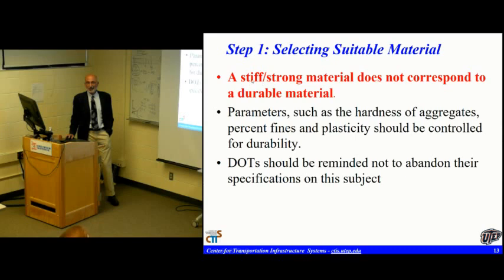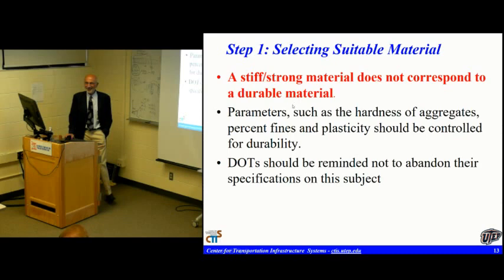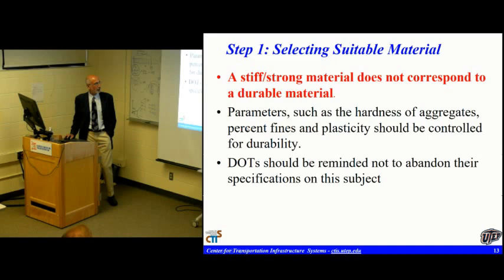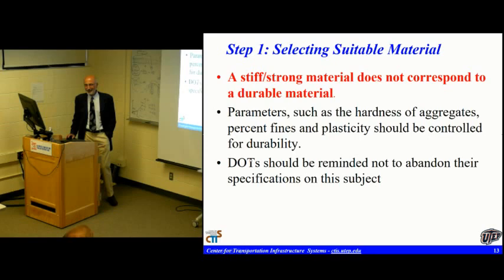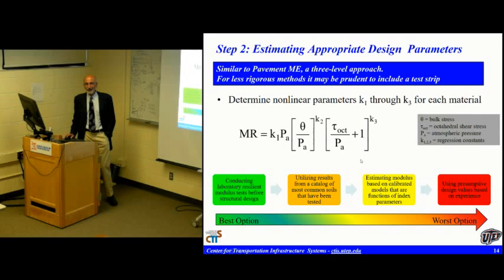A stiff or strong material doesn't mean it's a durable material. If you want a very good stiff material, get a really good base, add 15–20 percent clay in it, and leave it under the sun — when you test it, it will be extremely stiff until the first rain. Make sure that the legacy information and experience we have is not lost when you go from one process to the other. We cannot go to performance-type testing forgetting about angularity and material type, because modulus does not capture those things.